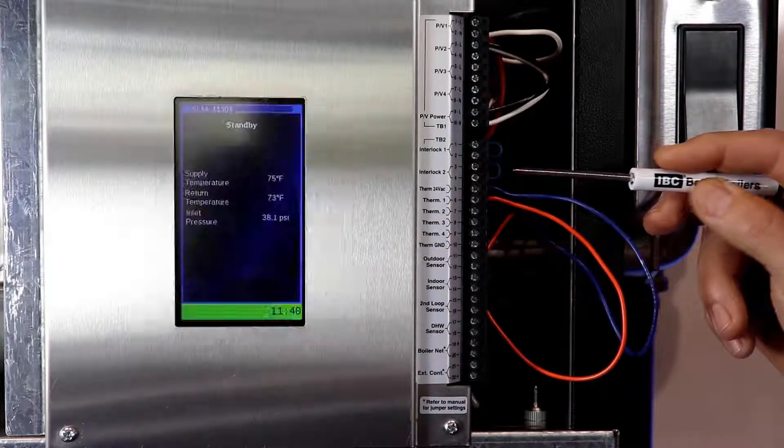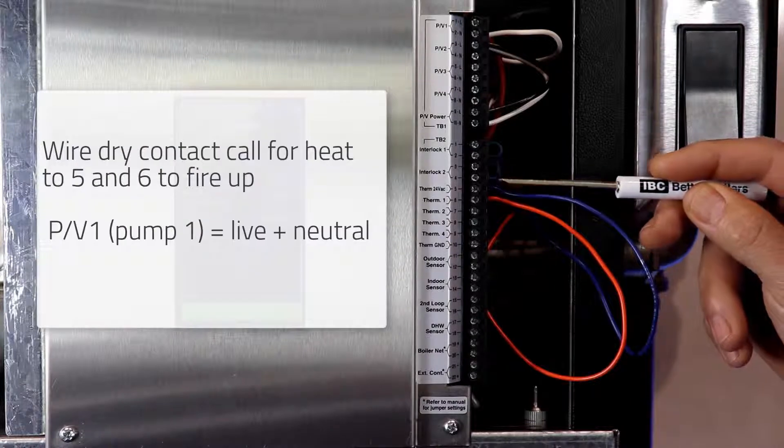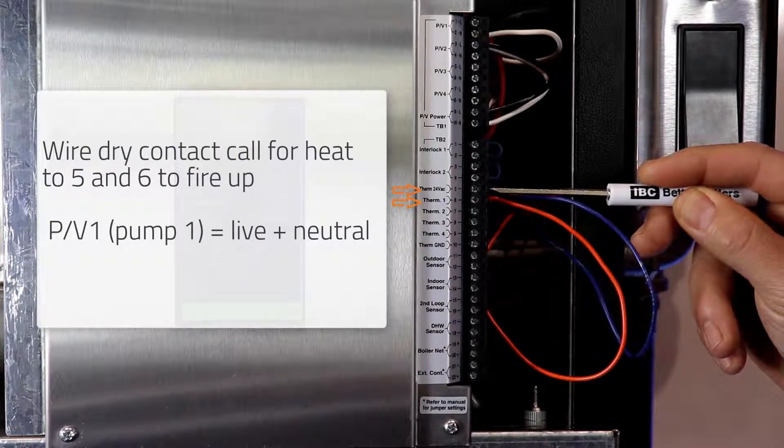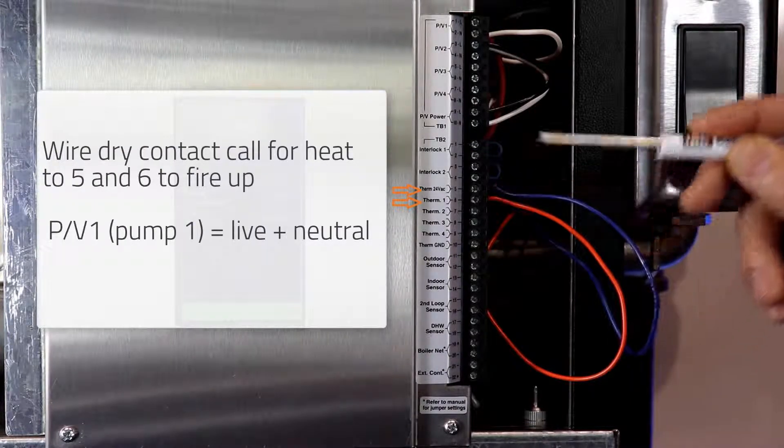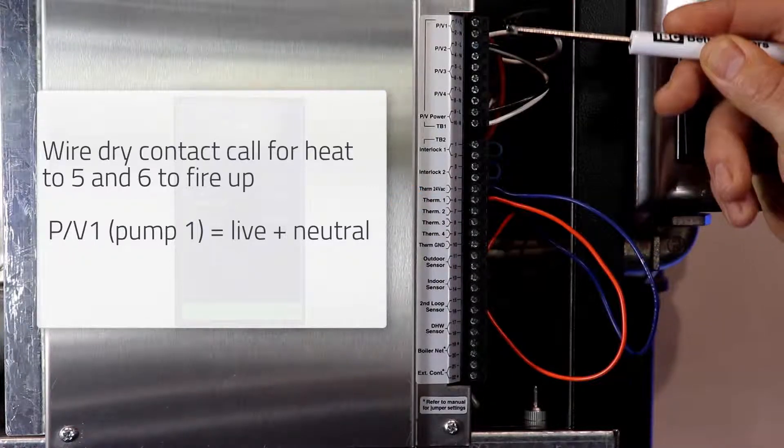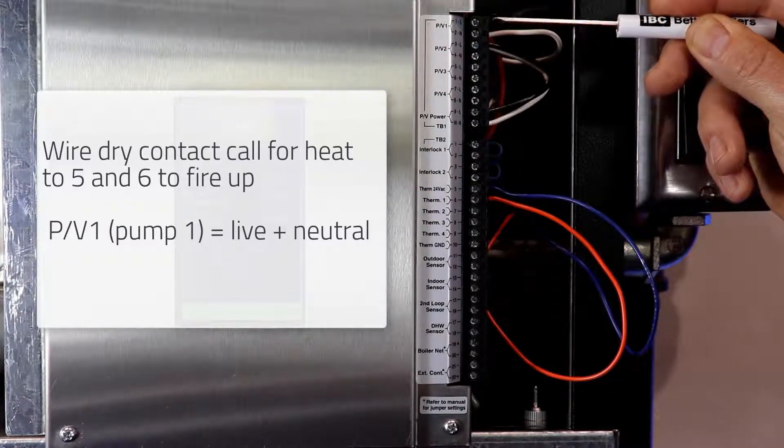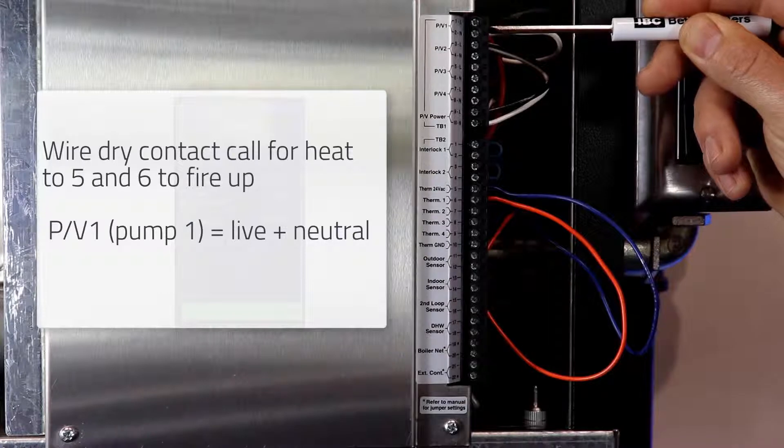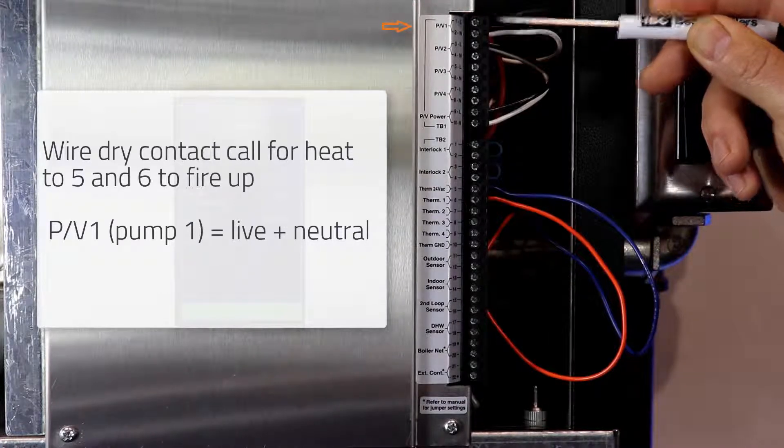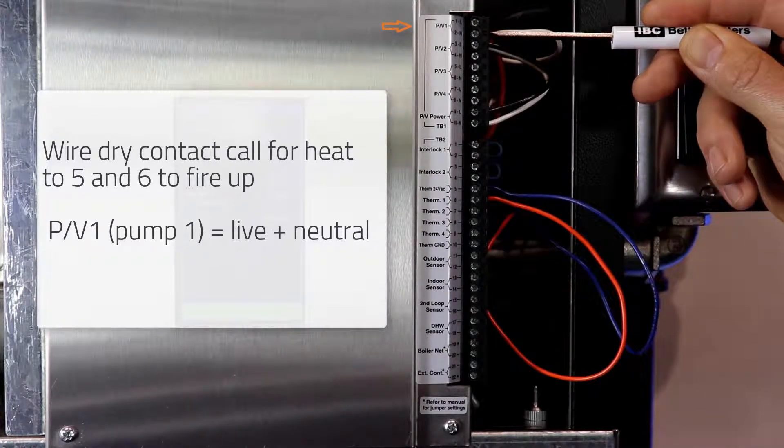Correspondingly, if you wire a dry contact call for heat to number 5 and 6 on term 1, when that dry contact closes, it will energize PV1 or pump number 1 with a live and a neutral for the pump.